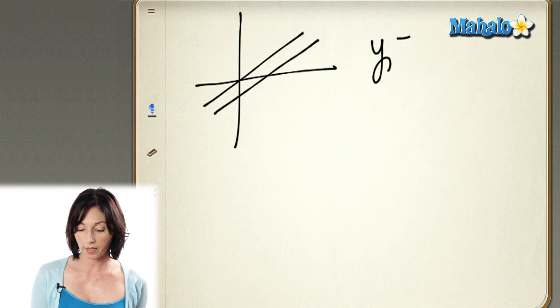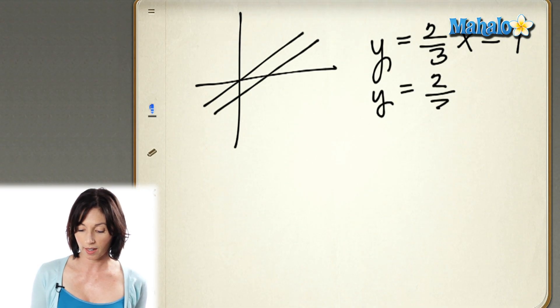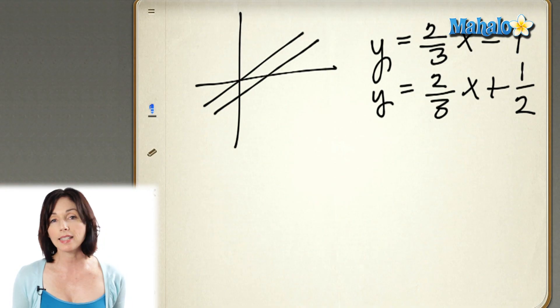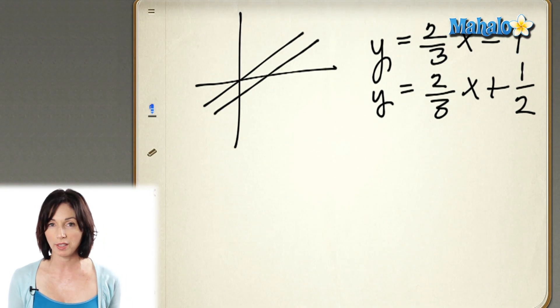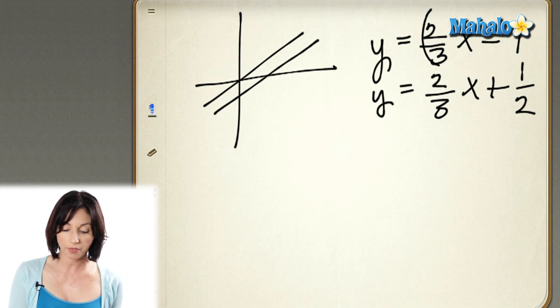let's say we have y equals 2/3 x minus 7 and y equals 2/3 x plus 1/2. I can tell that these two lines are parallel to each other because they have the same slope. So for them to be parallel, their slopes have to be equal.